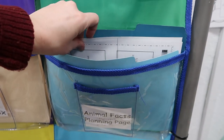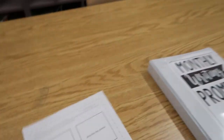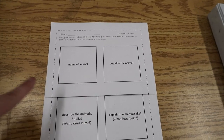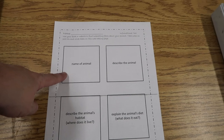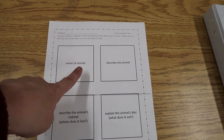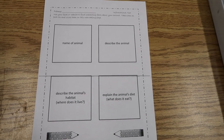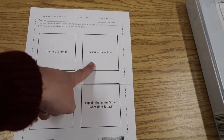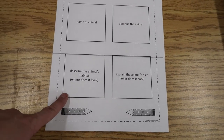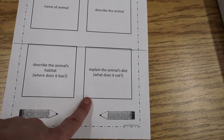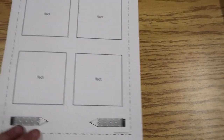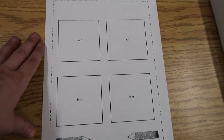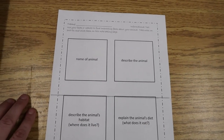This pocket has the animal facts planning page. We've actually been using this during writing time. I cover these boxes with a sticky note and they write notes on the sticky note — underneath it tells them what to find out about their animal. They write the name of their animal, describe the animal, describe the animal's habitat, and explain the animal's diet. On the back they do four interesting facts about their animal, and then use these notes to write their informational story.